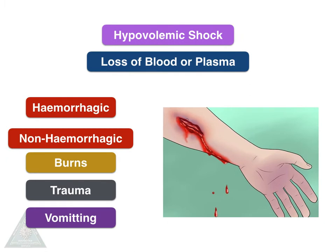The next is hypovolemic shock. It is mostly due to loss of blood or plasma. It can be divided into hemorrhagic, due to blood loss, and non-hemorrhagic, due to plasma loss — for example, burns, trauma, and vomiting.